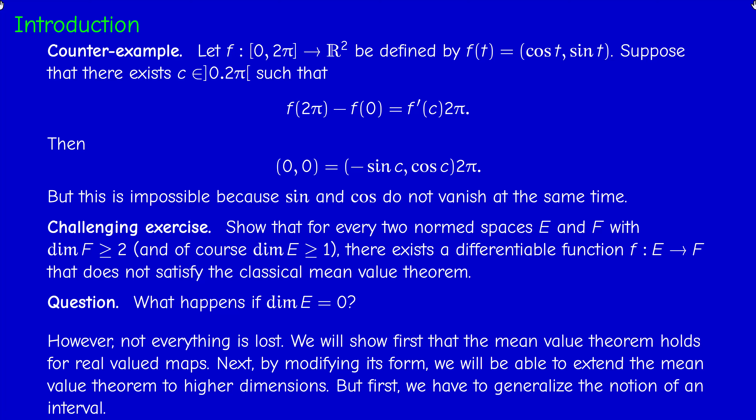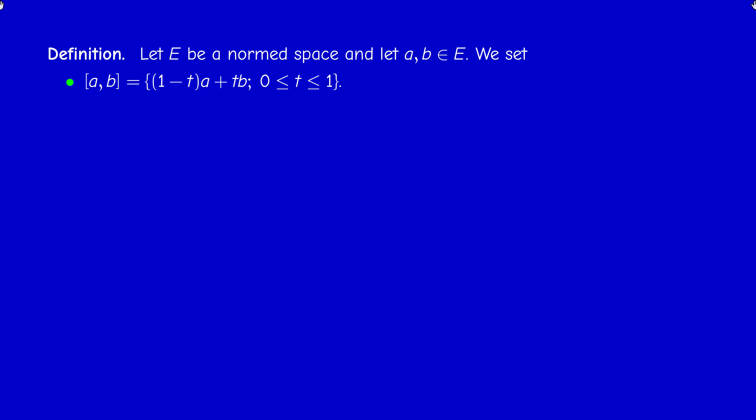For the first extension, we need to properly generalize the notion of an interval of ℝ. An interval of ℝ is both convex and connected — in ℝ the two notions coincide, but in higher-dimensional normed spaces they do not. So there are two paths: the convexity notion and the connectedness notion. In this video I will talk only about convexity; in the next section I will discuss the more general concept of connectedness.